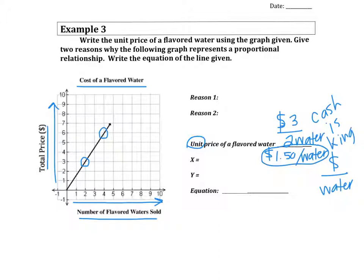The x-axis, that's easy. We just talked about it. All you have to do is write down number of flavored waters sold. And y, well, that's also already labeled. That's the total price.